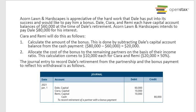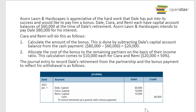Dale, Sierra, and Remy each have capital account balances of $60,000. Acorn Lawn and Hardscapes intends to pay Dale $80,000. To calculate the bonus, subtract Dale's capital balance ($60,000) from the cash payment ($80,000), giving a $20,000 bonus. That bonus is allocated to Sierra and Remy based on their income ratio — $10,000 each. The journal entry: debit Dale Capital $60,000, debit Sierra Capital $10,000, debit Remy Capital $10,000, credit Cash $80,000.